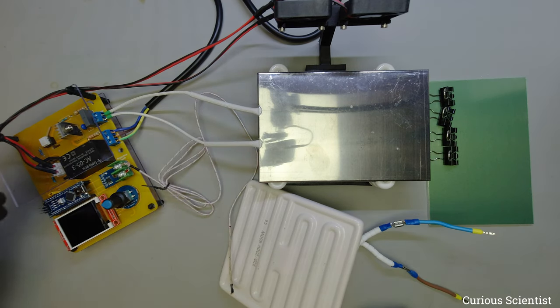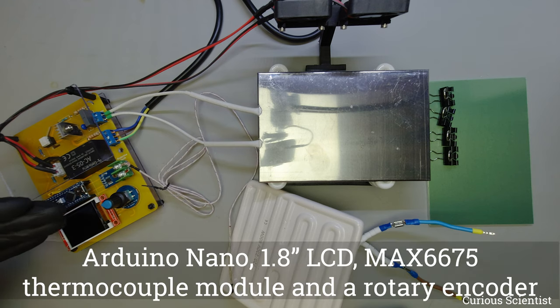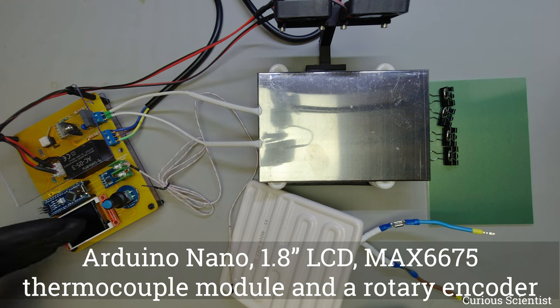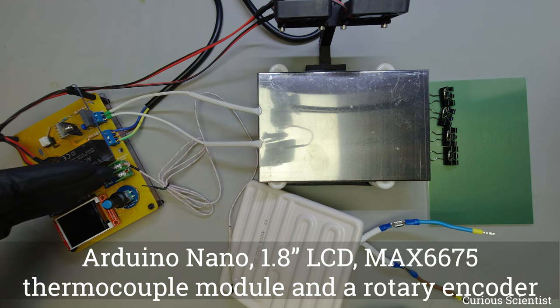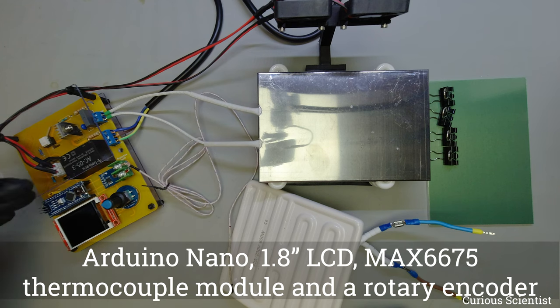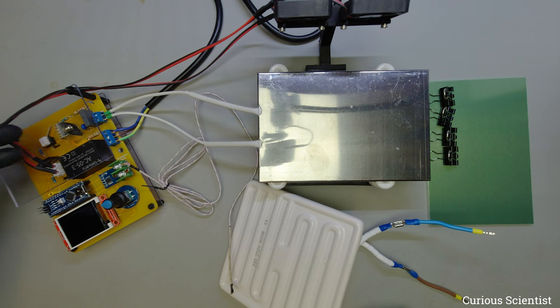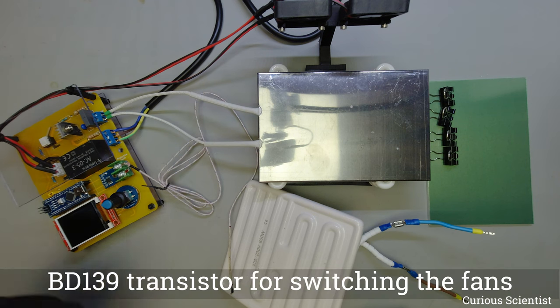Here we have the low voltage part which is basically a microcontroller based circuitry, Arduino Nano, which controls a LCD and reads this K-type thermocouple module and this rotary encoder and of course switches the triac on and off and the transistor when needed.